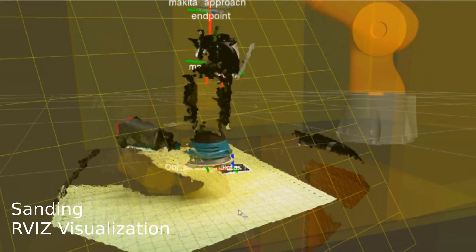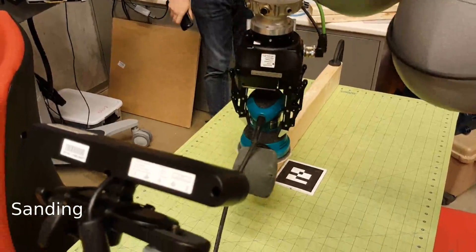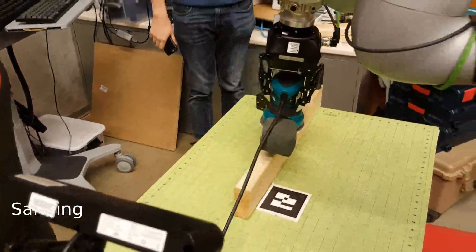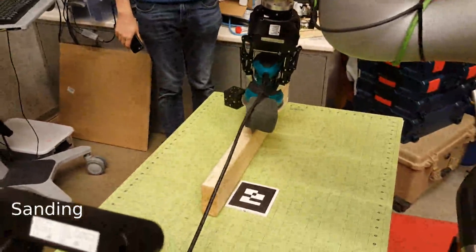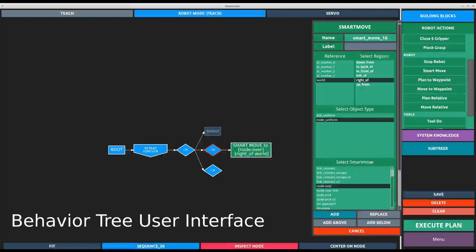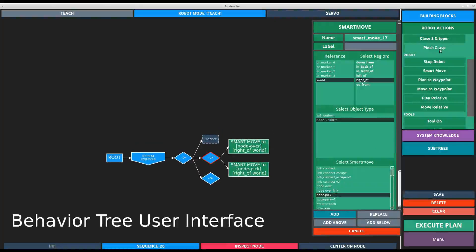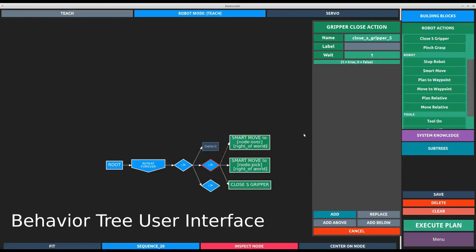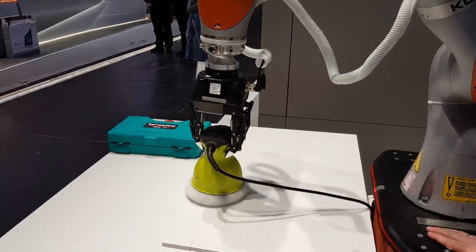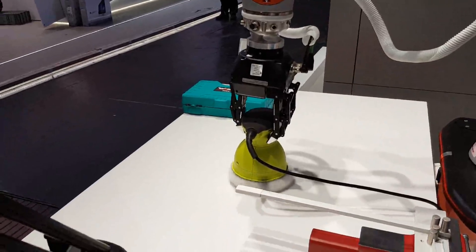CoStar makes it possible to author complex task plans in a matter of minutes. End users can author plans that use abstract perception to recognize known objects like tools, even in cluttered scenes. Individual components are tied together using a behavior tree based user interface. This lets users visually combine the operations exposed by different components and combine them into skills that can be employed in new contexts.